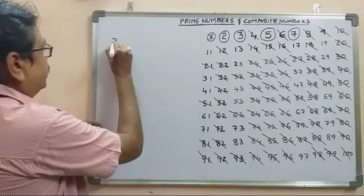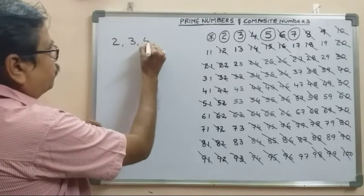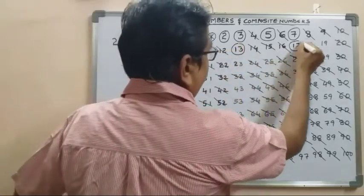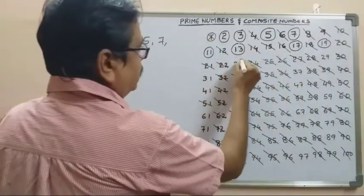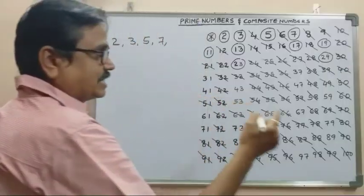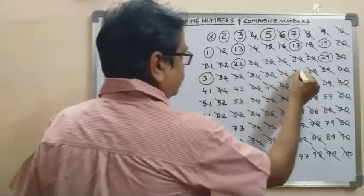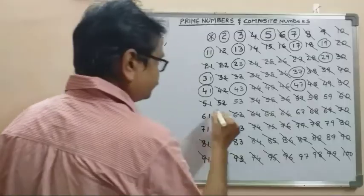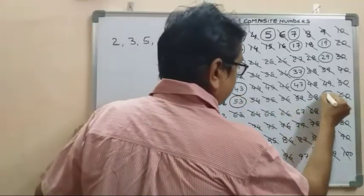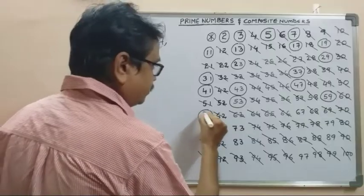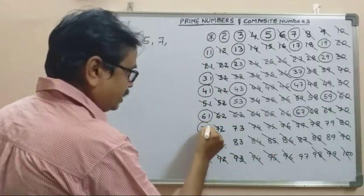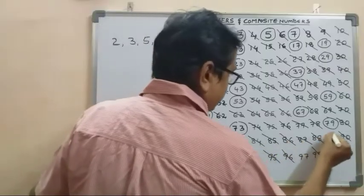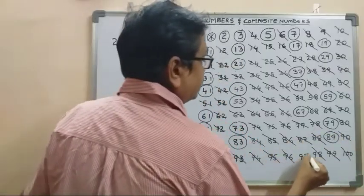The prime numbers between 1 and 100 are: 2, 3, 5, 7, 11, 13, 17, 19, 23, 29, 31, 37, 41, 43, 47, 53, 59, 61, 67, 71, 73, 79, 83, 89.